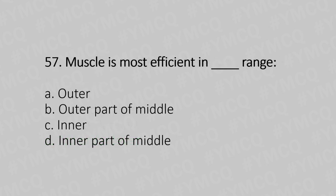Question 57: A muscle is most efficient in which range? Option A: outer, Option B: outer part of the middle, Option C: inner, Option D: inner part of the middle. The answer is Option B, outer part of the middle.